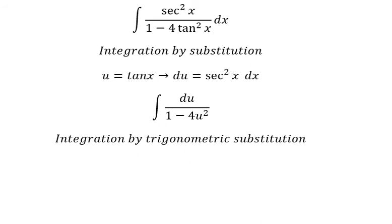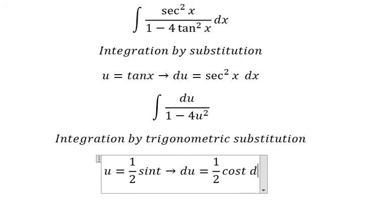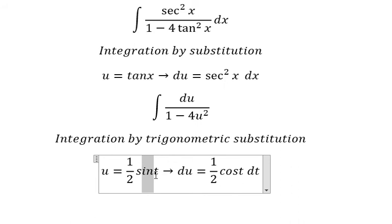So I will put u equals 1/2 sin t because if I put this one in here you get 1/4 sin²t. The 4s cancel, 1 minus sin²t becomes cos²t. Later we simplify by du. So du equals 1/2 cos t dt, the first derivative of sin t.